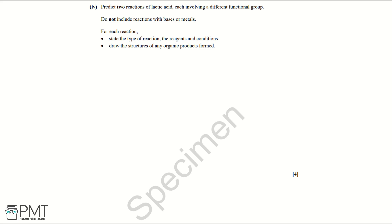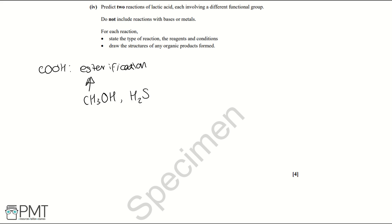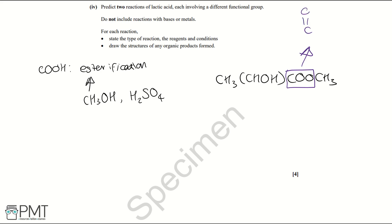Part four: predict two reactions of lactic acid, each involving a different functional group — do not include reactions with bases or metals. For the carboxylic acid group (COOH), the reaction is esterification. The reagents are an alcohol — using methanol (CH₃OH) — and an acid catalyst such as sulfuric acid (H₂SO₄). The ester produced would be CH₃CH(OH)COOCH₃, with the ester group C=O connected to an oxygen with two R groups.